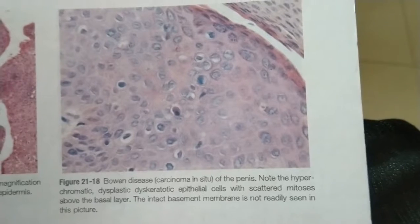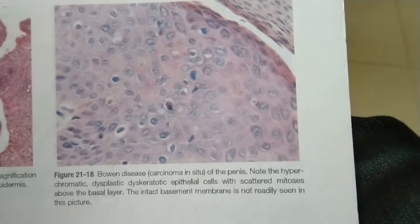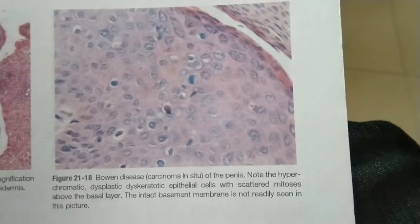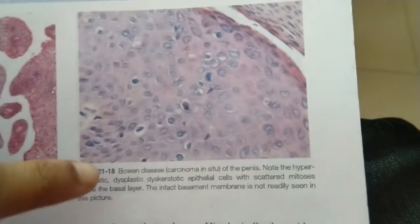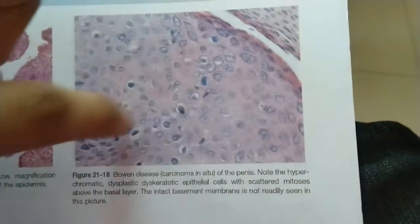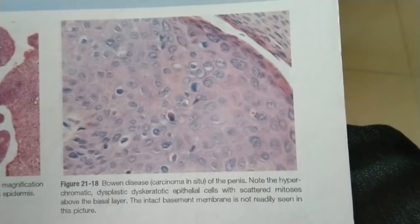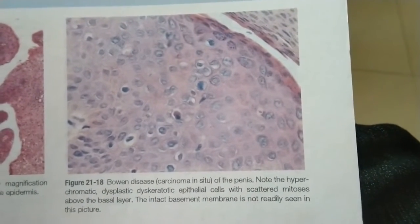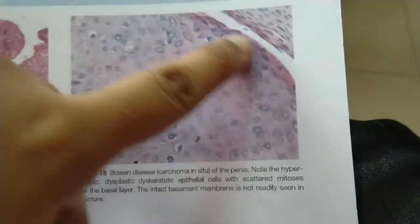This is the picture showing Bowen's disease, or carcinoma in situ of the penis. All these cells show nuclear cytoplasmic atypia, dysplastic and dyskeratotic epithelial cells.